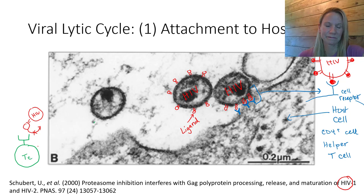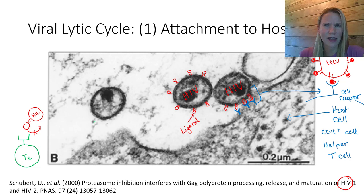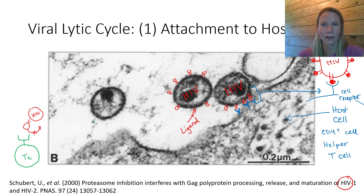Step one: attachment — very specific binding between the host cell receptor and the viral ligand. Once that attachment occurs, it initiates a chain reaction inside the cell to engulf the viral particle. Why would the cell do that? Because viruses are very sneaky — our cells have these receptors for a reason, playing a role in how signaling molecules communicate and how cells communicate with other cells.